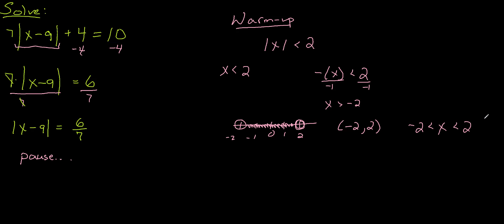So if we go back to the problem of interest here, we can do the same strategy except it's just a little bit more complicated. So on the left hand side we have x - 9 < 6/7, and then over here we have -(x - 9) < 6/7.